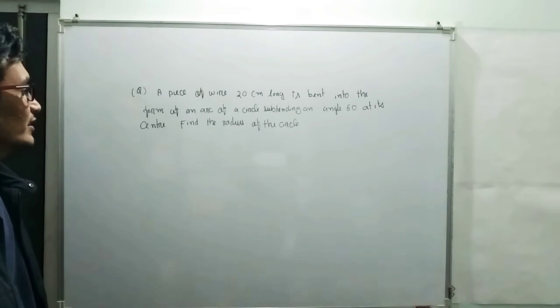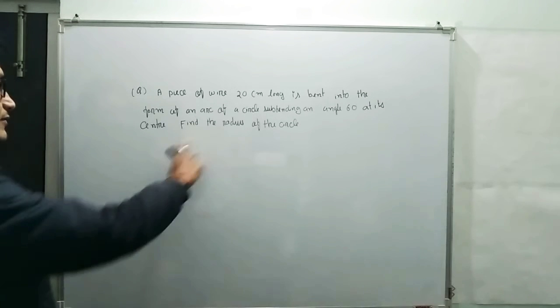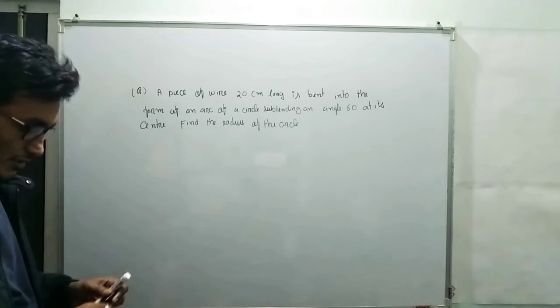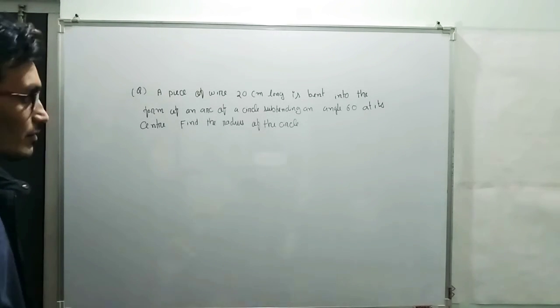Subtending an angle 60 degree at the center, find the radius of the circle. So before moving to the main solution...